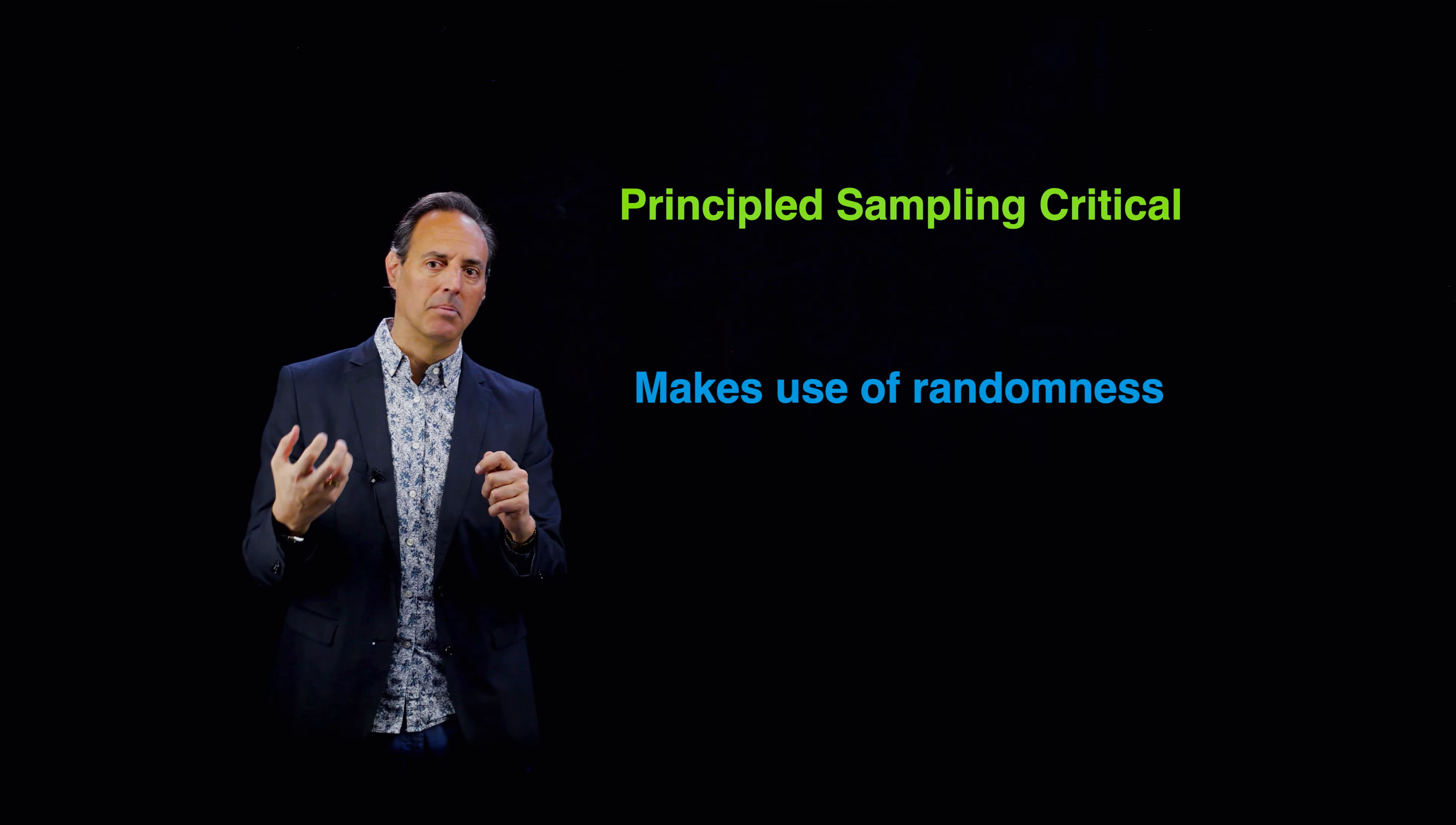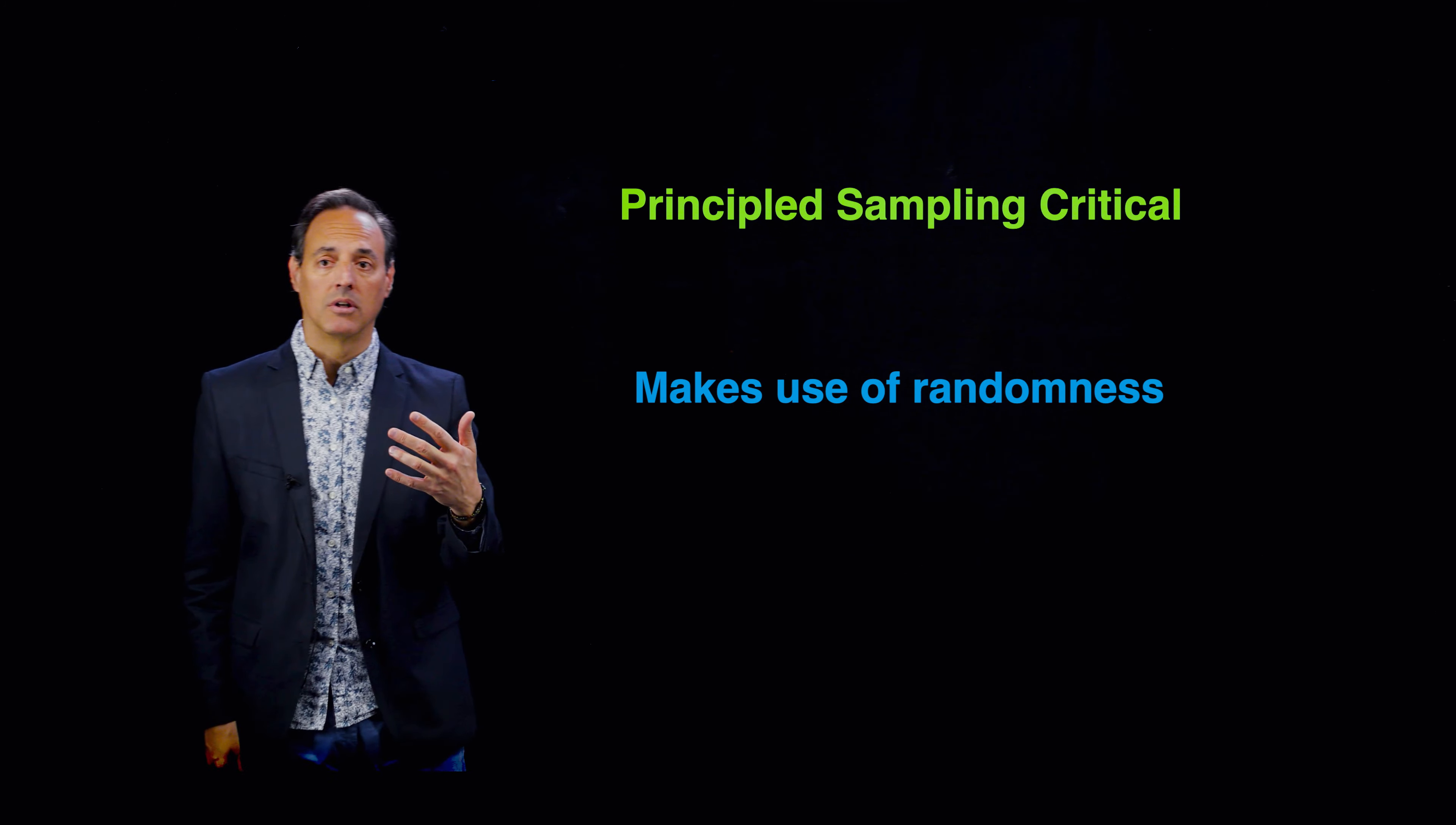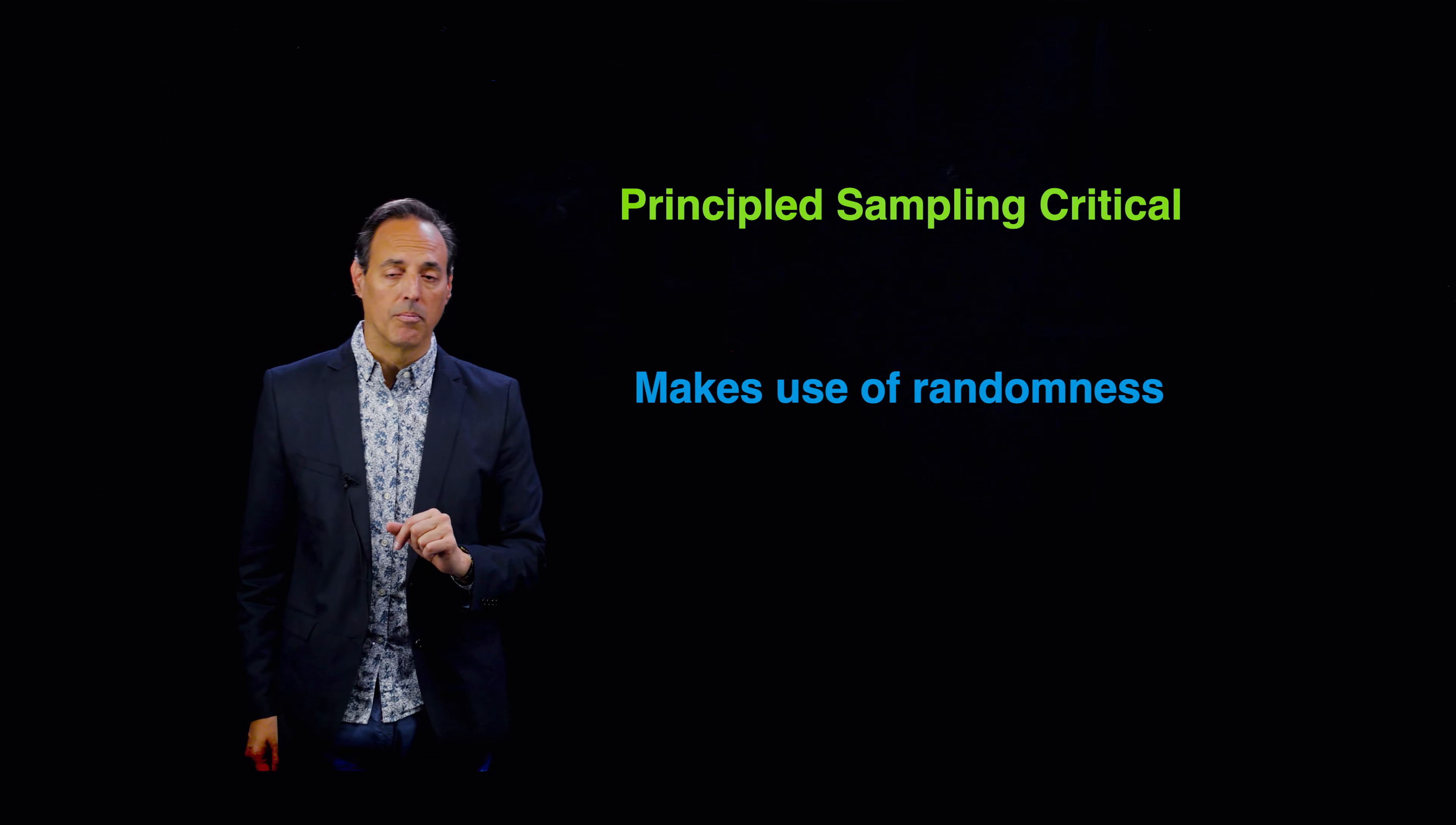This is another principled strategy. Notice that this principled strategy is a hybrid between making use of information that you have about the system—that the maximum and minimum variance of these modes are important to think about, that they have a lot of variability happening. So maybe put a sensor to measure it. But you're also making use of randomness because you don't measure at all those locations. You measure at some random subset of good potential candidates. So it's this marriage of randomness with principledness together in a nice effective way, and another architecture for thinking about how to overcome the difficulties with that interpolation problem.